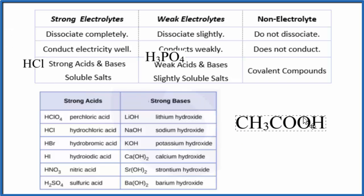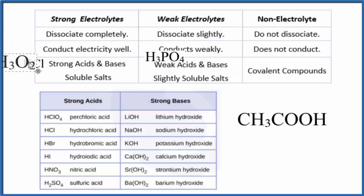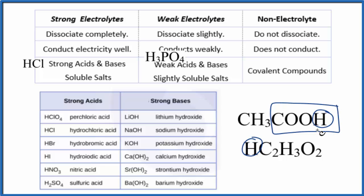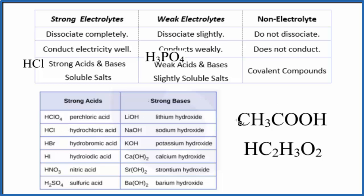What about CH3COOH? Sometimes you'll see this written as HC2H3O2, because this is a carboxylic acid and the H can appear at the end. You'll see it both ways — you just need to recognize this one. We look for CH3COOH, acetic acid, on the list of strong acids, and it's not on there. For that reason, this is going to be a weak electrolyte, because it's a weak acid.